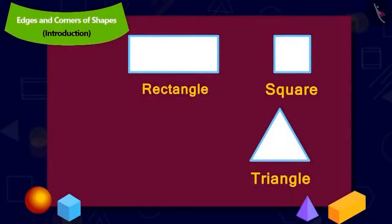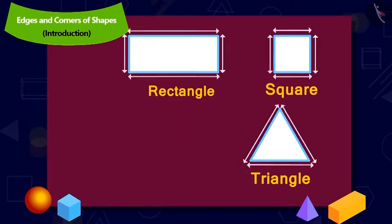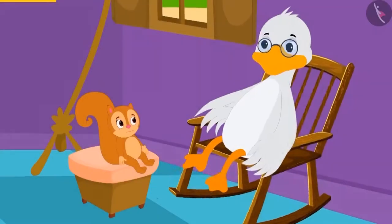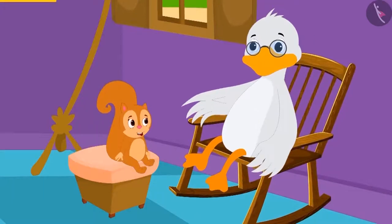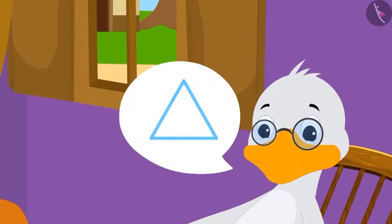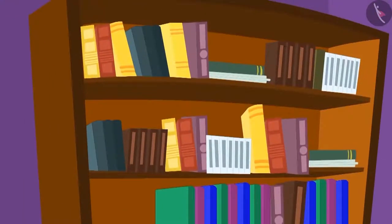Children, can you tell me if the edges of these shapes are made of straight lines or are they curved? Yes — the edges of these shapes are made of straight lines. Uncle told Chanda that if she wants the solution to the puzzle, she has to look for one triangular-shaped object. Can you find such an item in Uncle's house?